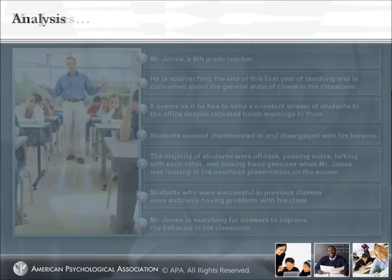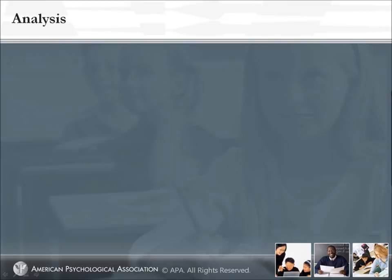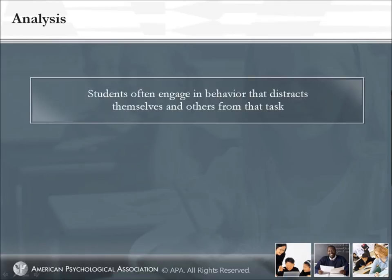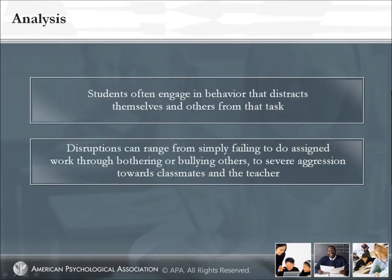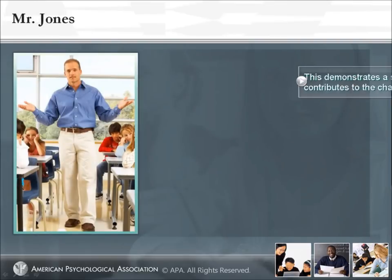Although the goal of teaching is to establish an environment in which children can learn, as the two scenarios have shown, students often engage in behavior that distracts themselves and others from that task. Mild or serious disruptions can range from simply failing to do assigned work through bothering or bullying others to severe aggression towards classmates and the teacher. The case of Ella is fairly typical of the types of mild student disruptions a teacher is likely to encounter in class. However, there is rarely one problem when a child is misbehaving. Understanding how these problems fit together and what causes them can ultimately provide insights into how to intervene. Think about the case of Mr. Jones — here is a situation where the teacher contributes to the chaotic state of the classroom.